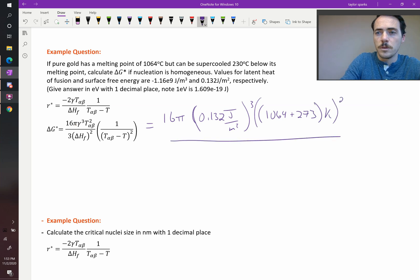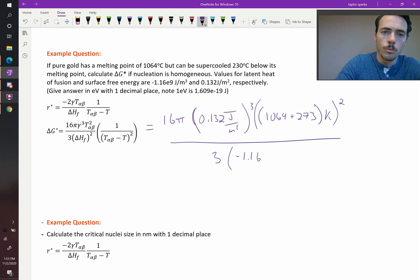This term needs to be squared. We're now going to divide that by 3 times the enthalpy of fusion. So that is negative 1.16e9 joules per meter cubed. That whole thing is squared. And we're going to multiply this by 1 over the temperature of your transition minus the temperature where it's actually happening at squared. So that's going to be 230 degrees squared, our supercooling value squared.